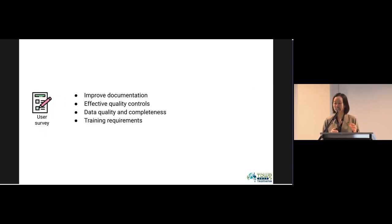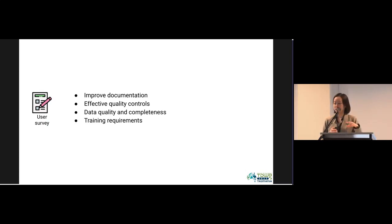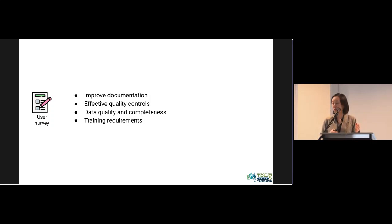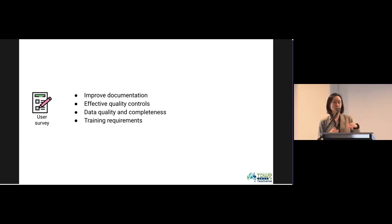We launched a user survey at the beginning of the project team. The relevant feedback we received covered four areas: improving documentation of how data in OBIS is being processed; the need for more effective quality control; issues of data quality and completeness; and training requirements for people who manage biodiversity data.